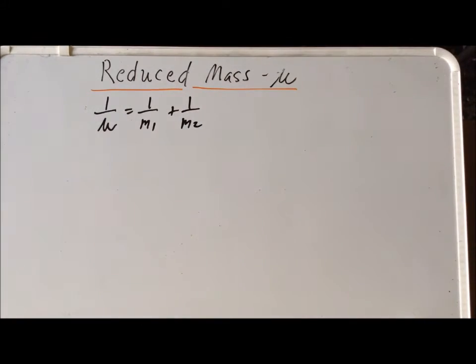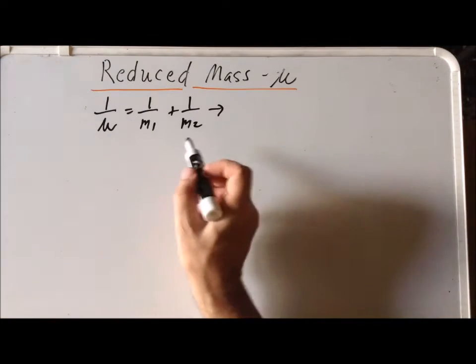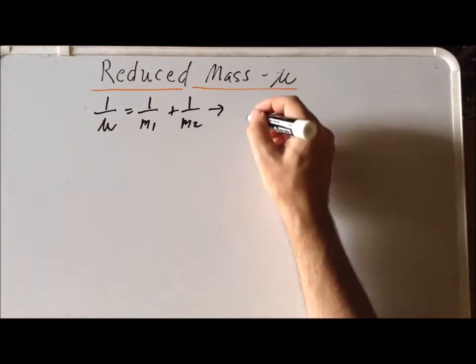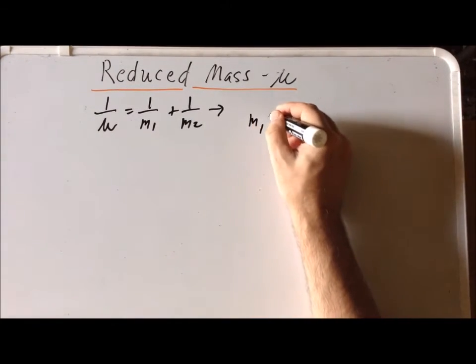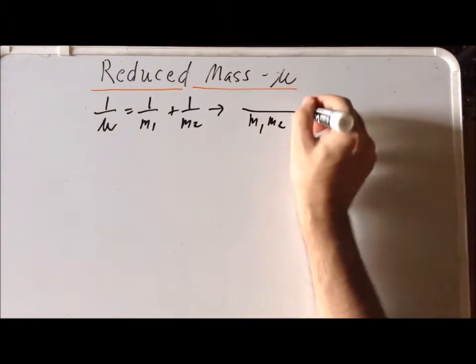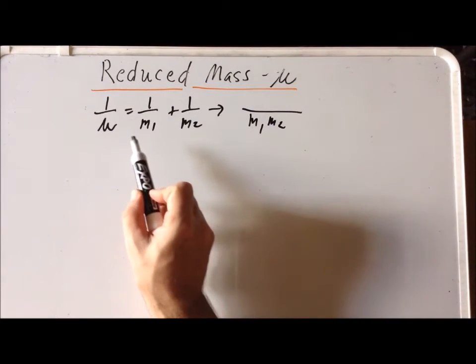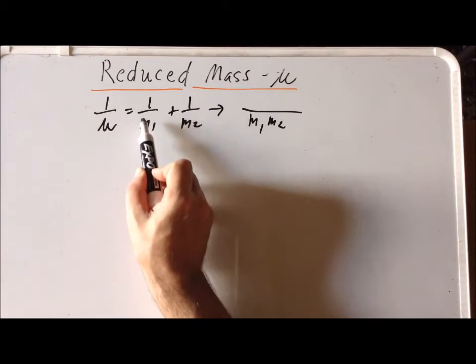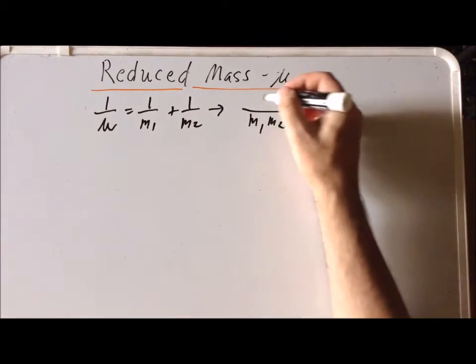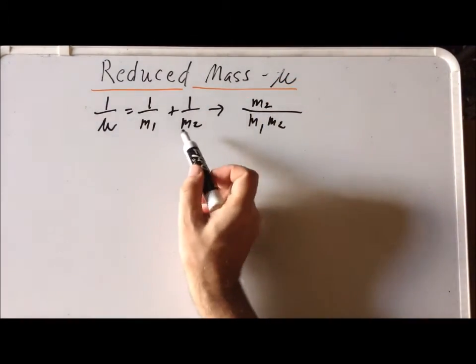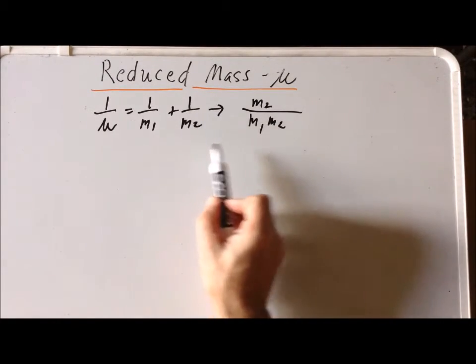And we can derive a sometimes more useful way of writing the reduced mass directly by noting that if we're trying to add two fractions together, we have to find a common denominator. So the common denominator that we would like to use would be M1 times M2. If we do that, this first fraction is M2 over M1 M2, and then the second fraction is going to be M1 over M1 times M2.